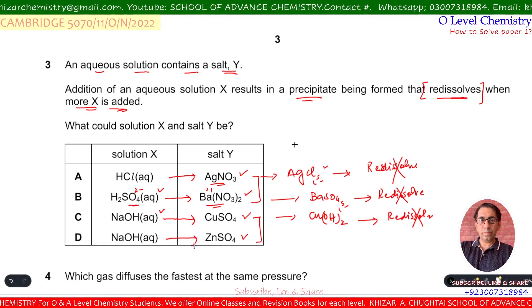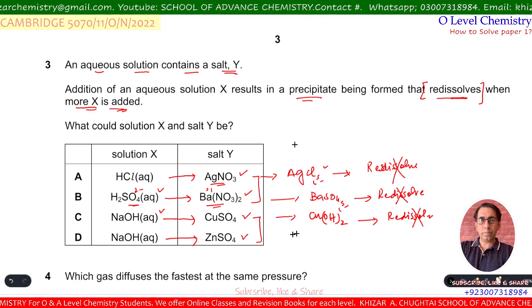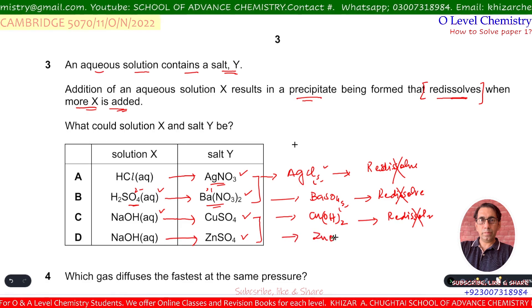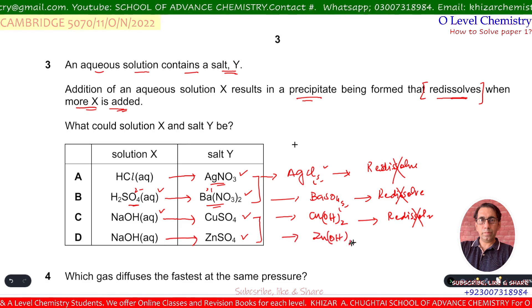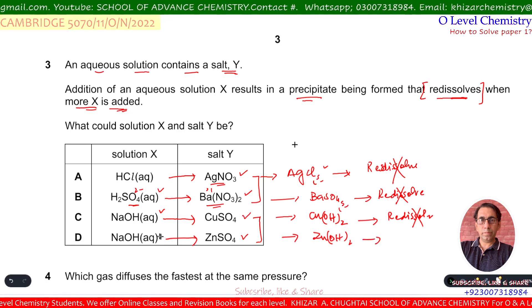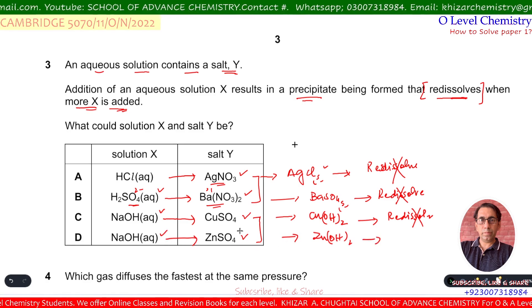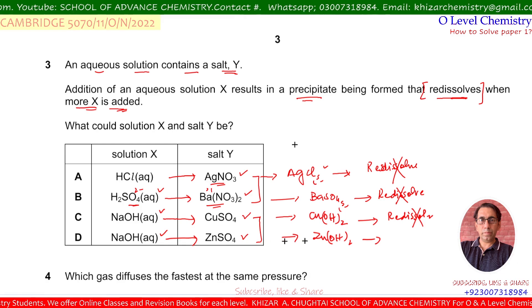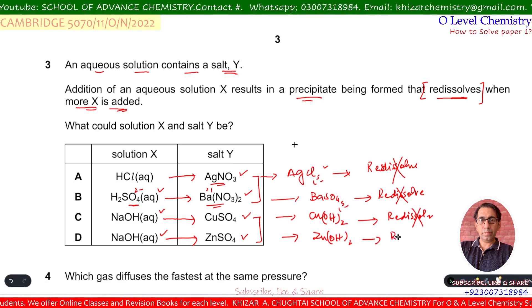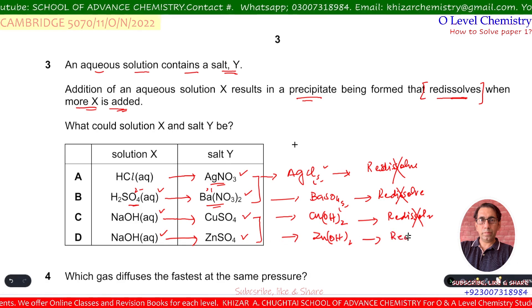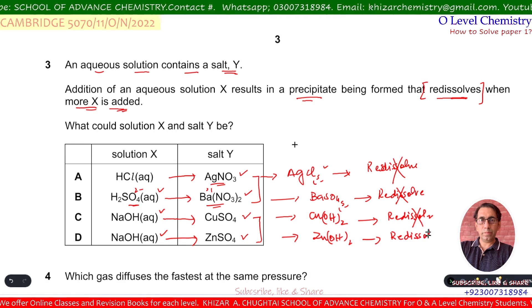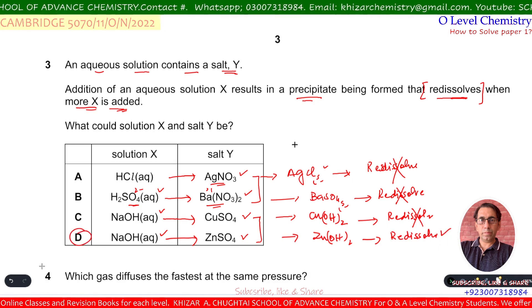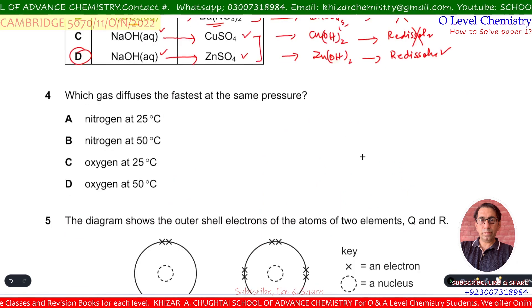When NaOH is added to zinc sulfate, a white precipitate of zinc hydroxide forms. When more NaOH is added to aqueous zinc sulfate, the precipitate redissolves. So D is the correct option.